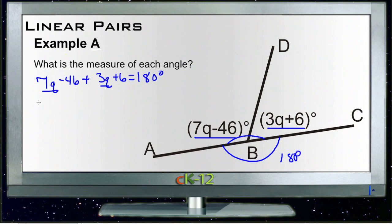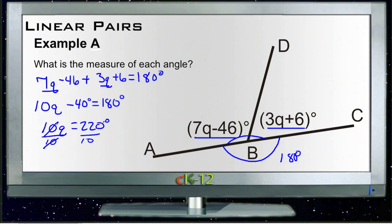We have 7q's here and 3q's here that gives us a total of 10q's, and then we have negative 46 and positive 6, so that's negative 40 and that equals 180. Then we add 40 to both sides and we'll have 10q equals 220, and then divide both sides by 10 and we get q equals 22.